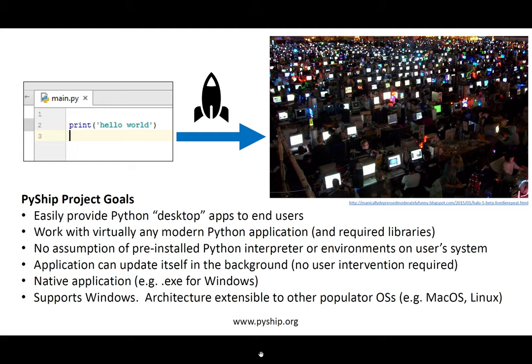Also, applications created with PyShip make no assumption of any pre-installed Python. The executable that is run looks like a native application to the operating system — in other words, an EXE on Windows. In addition, PyShip supports automatic application updating, which can be done in the background. This is something fairly unique to PyShip. Currently, PyShip only supports Windows, but it is architected so that macOS and Linux ports can be added later.